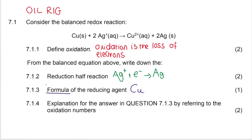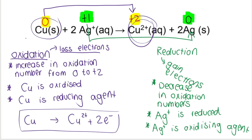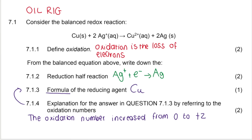Back to the exam question — give the explanation for your answer in 7.1.3 by referring to oxidation numbers. We say the oxidation number increased from 0 to plus 2, and that shows that oxidation took place. It's not just enough to say that it increased — that would get you one mark. You have to say how it increased to get the second mark.